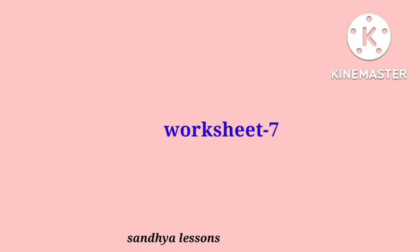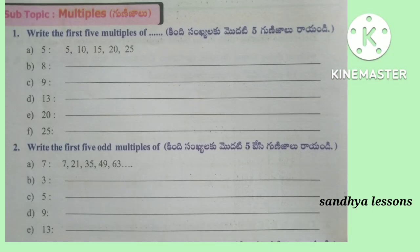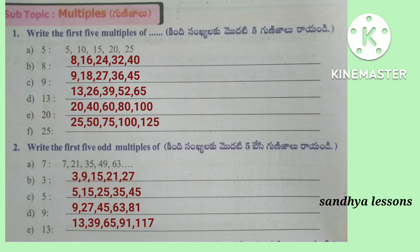Worksheet 7, First Roman: Write the first 5 multiples of the given numbers. First 5 multiples of 8 are 8, 16, 24, 32, 40. First 5 multiples of 9 are 9, 18, 27, 36, 45. First 5 multiples of 13 are 13, 26, 39, 52, 65. First 5 multiples of 20 are 20, 40, 60, 80, 100. First 5 multiples of 25 are 25, 50, 75, 100, 125.